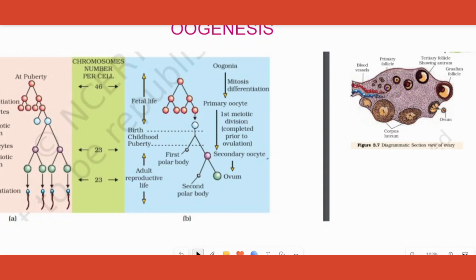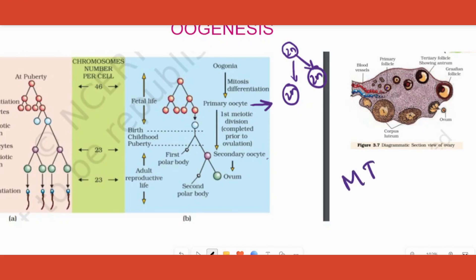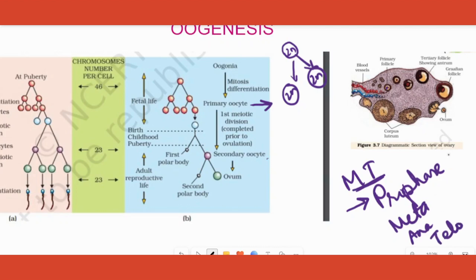Meiosis has two phases: phase 1 and phase 2. The primary oocytes are obtained from oogonia by mitotic division — one oogonia (2n) divides into two, and we call them primary oocytes. Some of them enter meiosis 1 and start with prophase. As we know, meiosis has prophase, metaphase, anaphase, and telophase. The primary oocytes enter prophase and stop there.